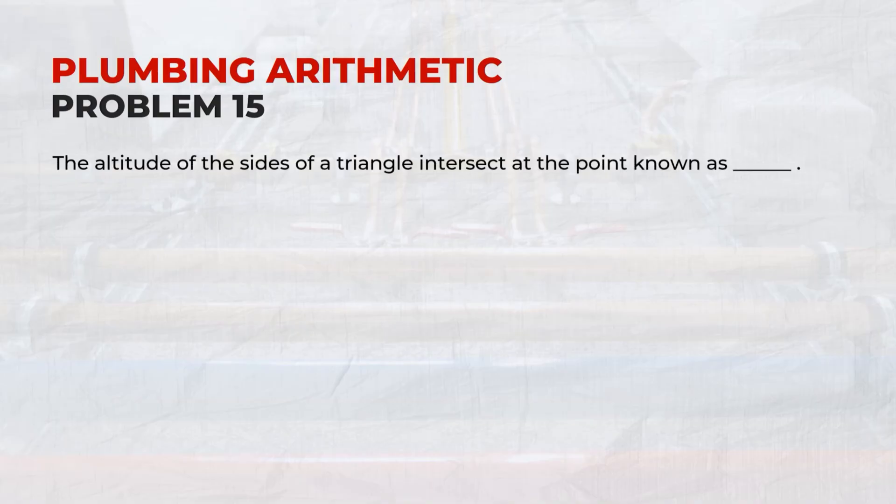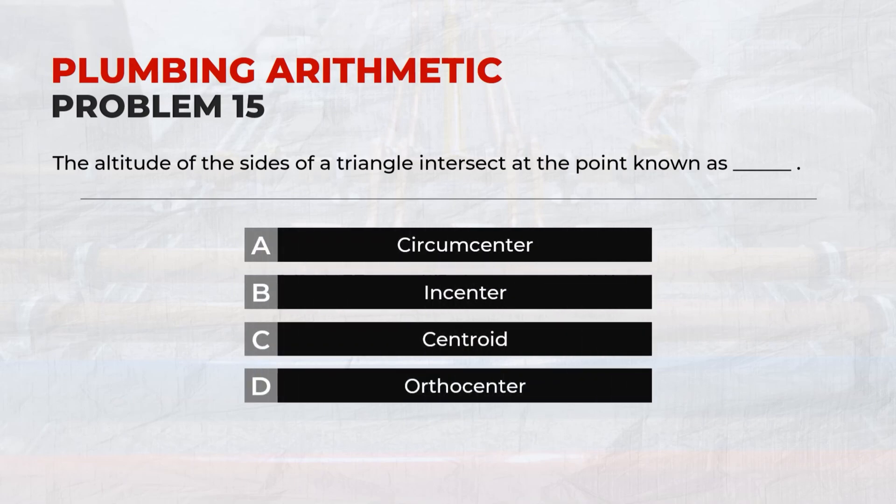Problem 15: The altitude of the sides of a triangle intersect at the point known as? Answer: D, Orthocenter.